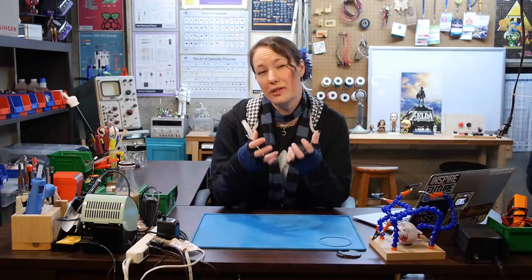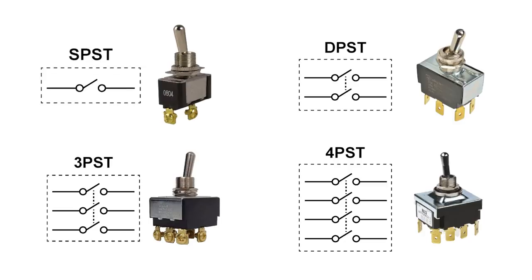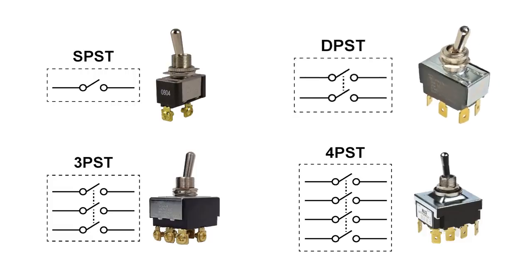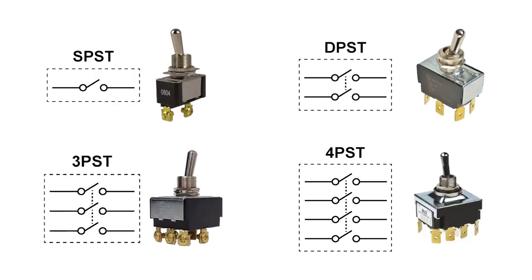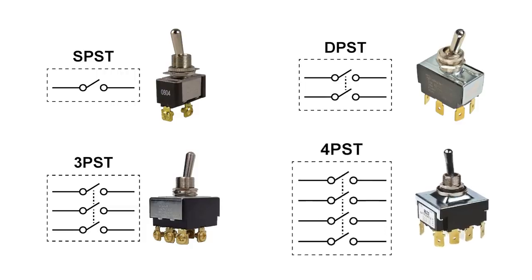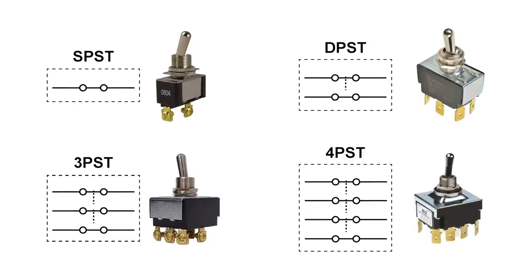The number of electrically separate switches within a single package controlled by a single actuator are the poles. These are all single throw switches. Each has a different number of separate switches or poles within the package. Single pole has one connection made. Double pole has two separate connections made. Triple pole has three connections, and four pole has four separate connections. Within each switch, all connections are made by a single motion of a single mechanism.